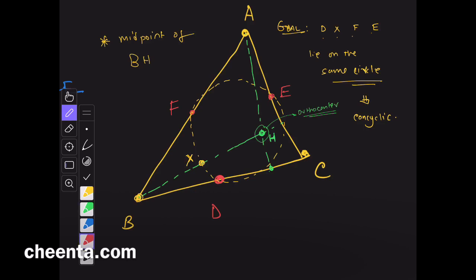So, the angle chasing method will work here. We join the four points like this. So, maybe we can join X, F, E, E, D, and D, F. And then, we try to show that the sum of the opposite angles. So, goal.